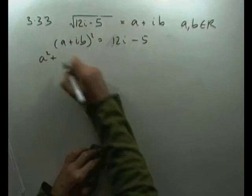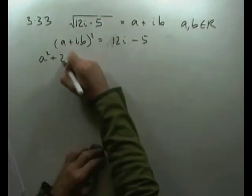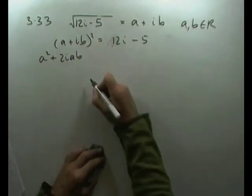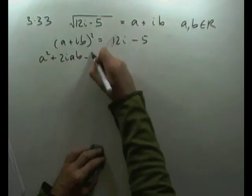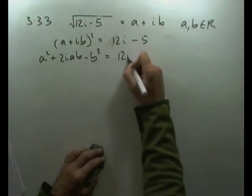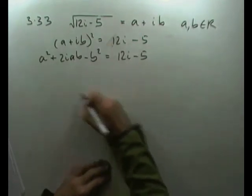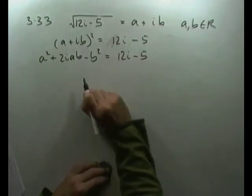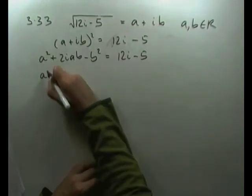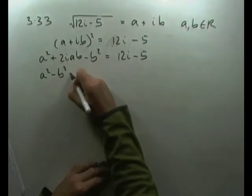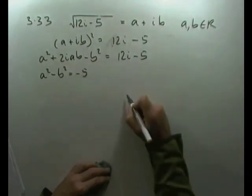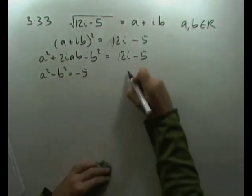Square the first, twice the product, square the last: a² + 2iab + i²b² = a² + 2iab - b² = 12i - 5. Equating coefficients, a² - b² = -5 and 2ab = 12.